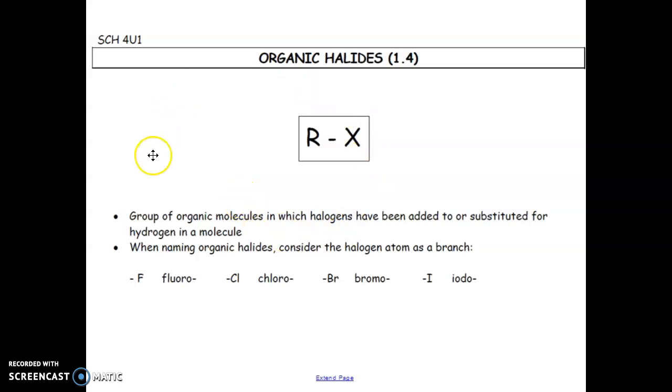Okay, good morning everyone. So this is a short little lesson on organic halides. Essentially an organic halide is anything that has, you're going to see this notation quite a bit. The R represents any carbon, so like any carbon structure.